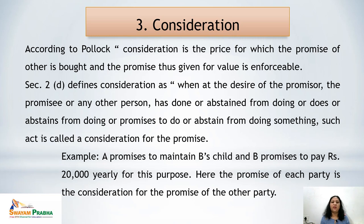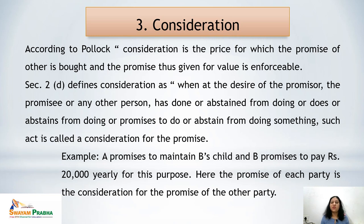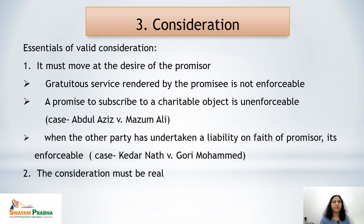Section 2(d) of the Indian Contract Act defines consideration as: when at the desire of the promisor, the promisee or any other person has done, abstained from doing, or promises to do or abstain from doing something, such act is called a consideration for the promise. For example, A promises to maintain B's child and B promises to pay rupees 20,000 yearly. Here the promise of each party is the consideration for the promise of the other party — showing that consideration is indeed something in return.